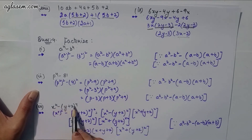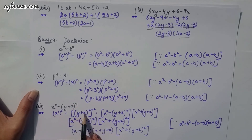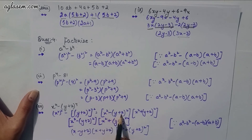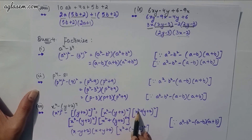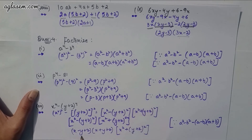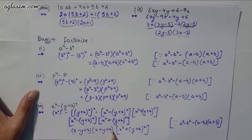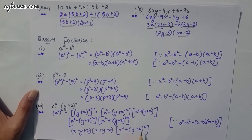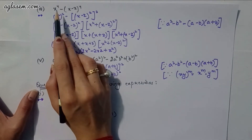Third part: x⁴ − (y + z)⁴. Write as (x²)² − [(y + z)²]² = [x² − (y + z)²][x² + (y + z)²]. The first bracket factors further: (x − (y + z))(x + (y + z)) = (x − y − z)(x + y + z). Final answer: (x − y − z)(x + y + z)(x² + (y + z)²).